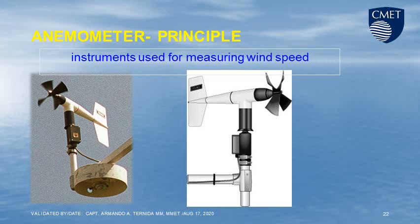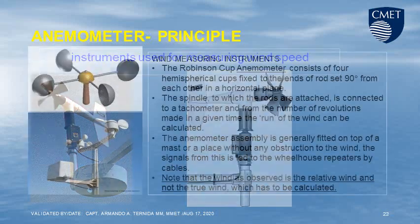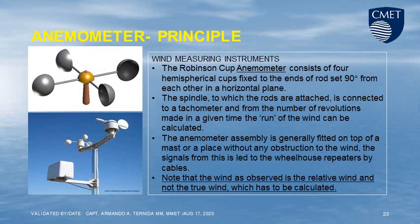Anemometer principle — an instrument used for measuring wind speed. The Robinson Cup anemometer consists of cups, or bowls, in a spherical cup shape, fixed to the ends of rods set 90 degrees from each other in a horizontal plane. The spindle to which the rods are attached is connected to a tachometer, and from the number of revolutions made in a given time, the run of the wind can be calculated. The anemometer assembly is generally fitted on top of a mast or placed without any obstruction to the wind, and the signals lead to wheelhouse repeaters by cables. Note that the wind as observed is a relative wind, not the true wind, which has to be calculated.